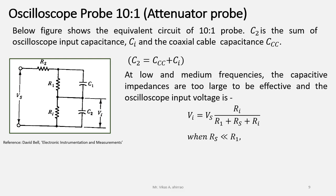When Rs is very small than the value of R1, then Vi is nearly equal to Vs times Ri upon R1 plus Ri.